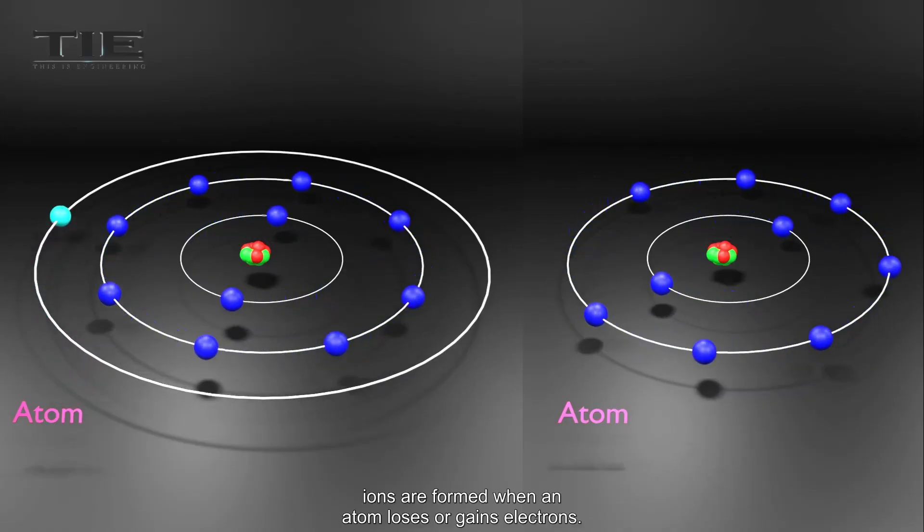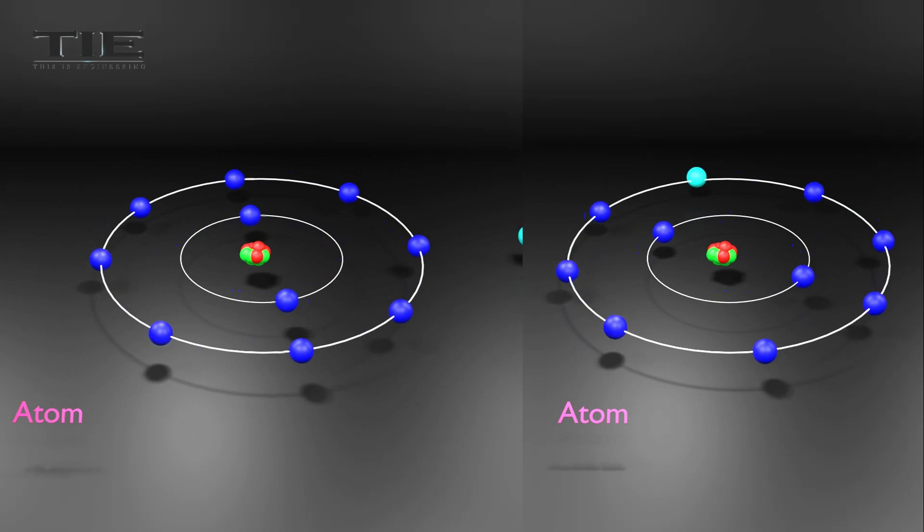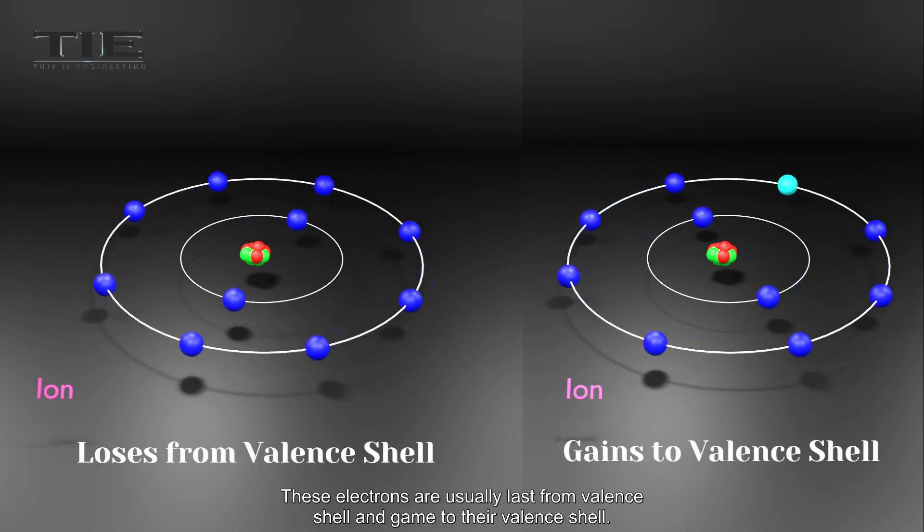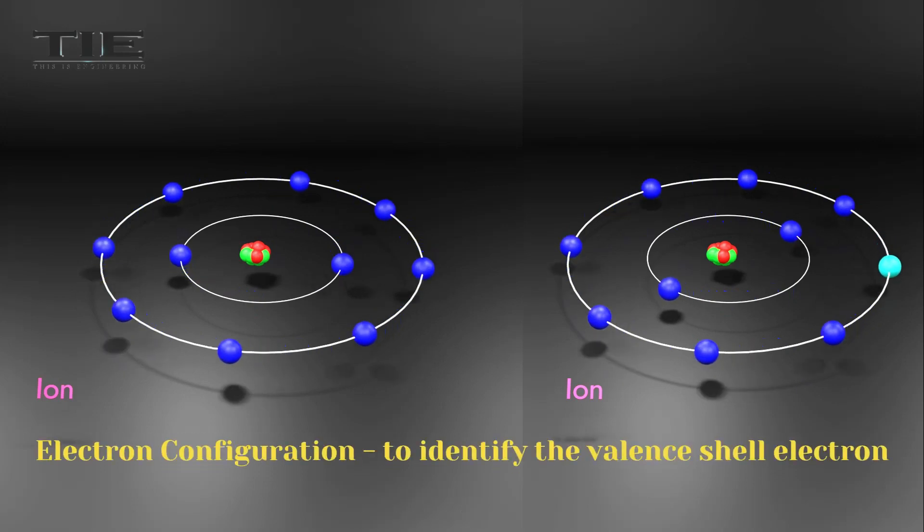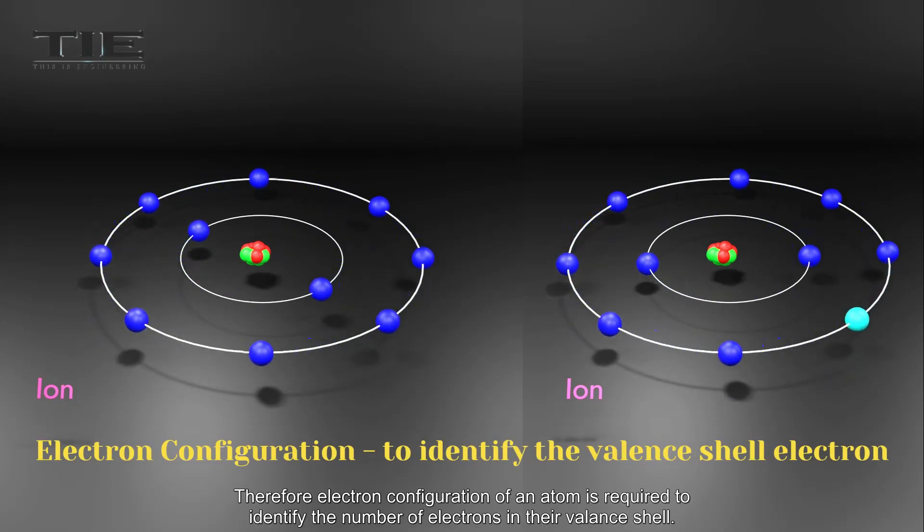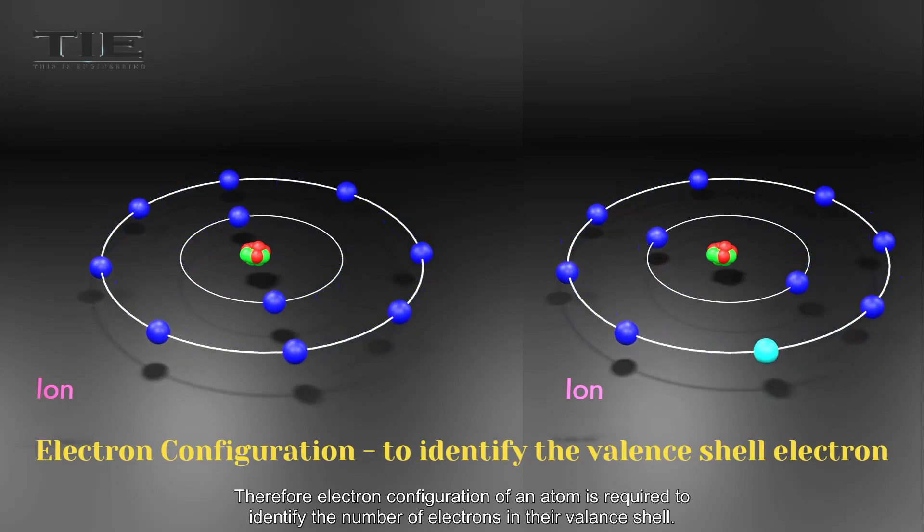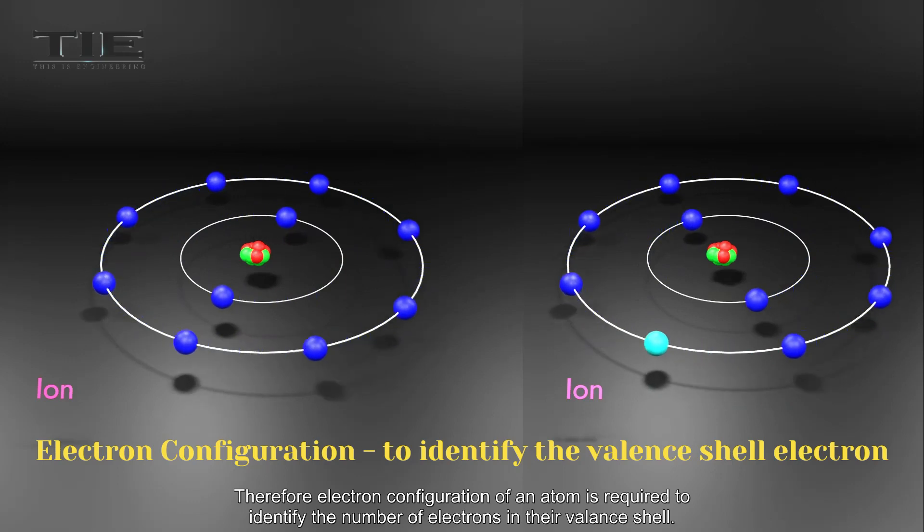Ions are formed when an atom loses or gains electrons. These electrons are usually lost from valence shell and gained to their valence shell. Therefore, electron configuration of an atom is required to identify the number of electrons in their valence shell.